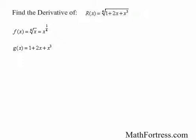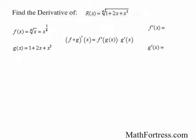To use the chain rule, we need to find the derivatives of f of x and g of x. The derivative of f of x equals one-fourth times x to the power of negative three-fourths, and the derivative of g of x equals 2 plus 3x squared.